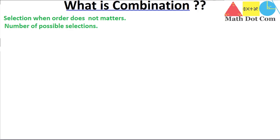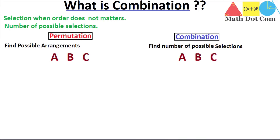Let's understand this concept with the help of an example. Permutation will also be discussed side by side so that you can understand how permutation differs from combination. Here we have permutation on one side and combination on the other. We will find both at the same time for clarity. If you are given the word ABC and you have to find its permutation, what will it be?